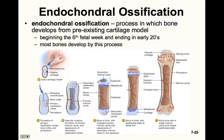Eventually, the perichondrium stops producing chondrocytes and begins producing osteoblasts. These osteoblasts deposit a thin collar of bone around the cartilage, encircling it like a ring to provide physical reinforcement. The former perichondrium is now considered periosteum. The chondrocytes in the middle of the model enlarge, and the matrix between the lacunae is reduced to very thin walls — this is the region of chondrocyte enlargement.